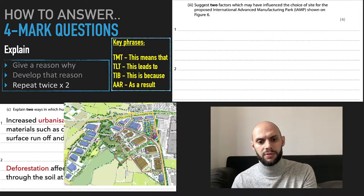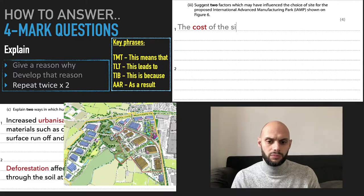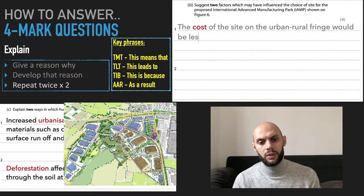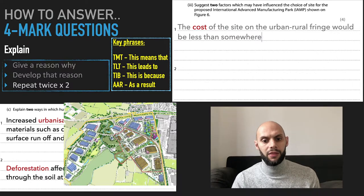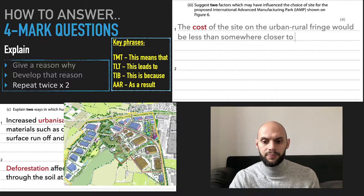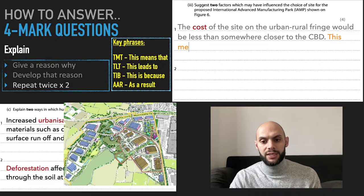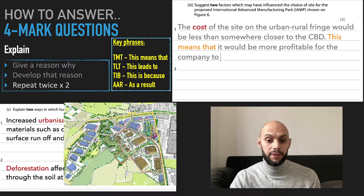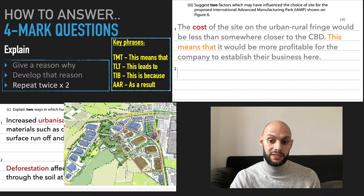So for example, it'll be something along the lines of this. The cost of the site on the urban rural fringe, the border, would be less than somewhere closer to the CBD. This means that it would be more profitable for the company to establish their business here.